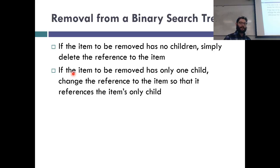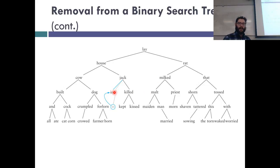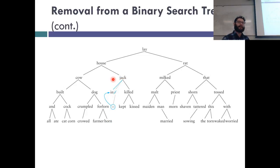The second case: if the node to remove has only one child, you just change the reference so that basically the grandparent adopts the child. For example, if we remove 'is' and 'in' was its child, then Jack adopts 'in' as its child. So basically, you get replaced by your child if you have one child, and everything stays in order.